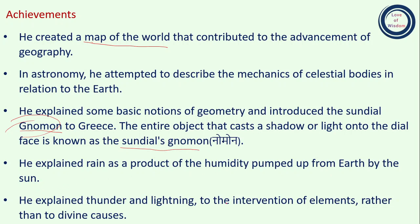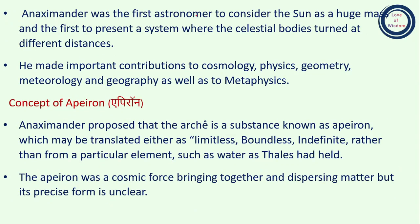He explained rain as a product of the humidity pumped up from the earth by the sun. He explained thunder and lightning as due to the intervention of elements rather than divine causes — meaning thunder and lightning are not caused by divine power but by the intervention of elements. Anaximander was the first astronomer to consider the sun as a huge mass and the first to present a system where celestial bodies move at different distances.